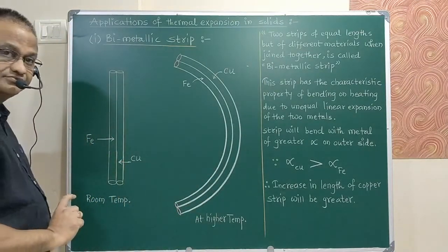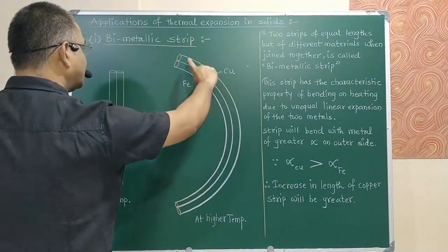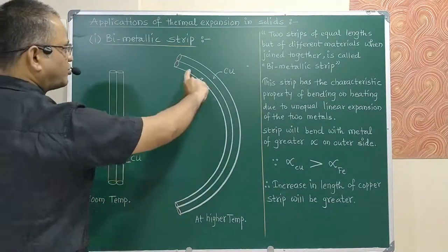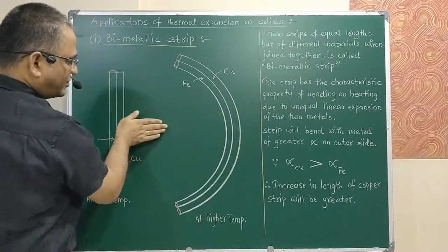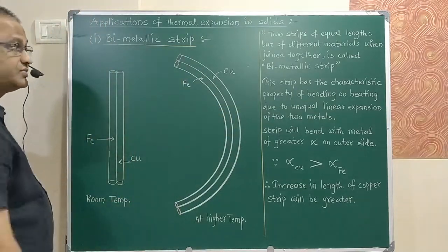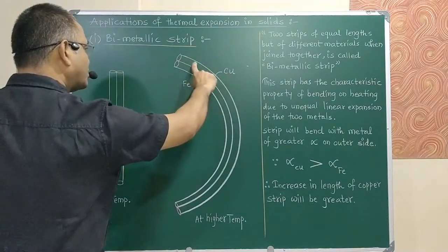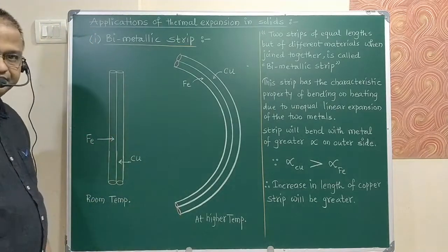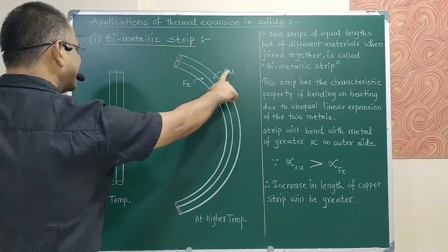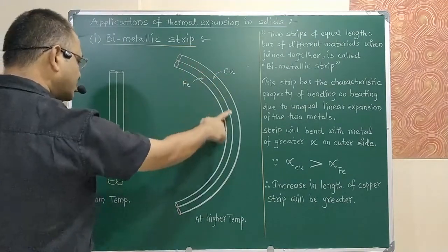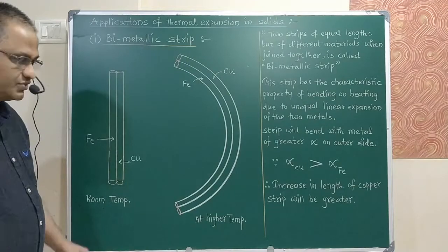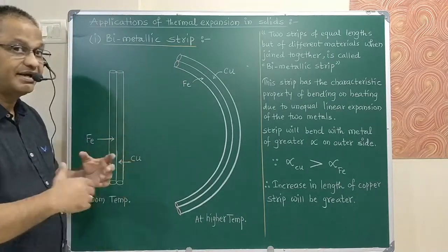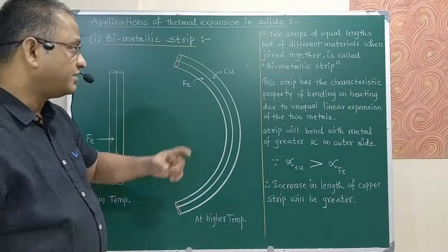The metal with smaller alpha will be on the concave side. Since the alpha of copper is greater than the alpha of iron, copper will be on the outer convex side. So the bimetallic strip bends at high temperature because the alpha values of the different metals are different, causing unequal expansion.